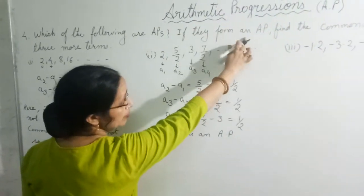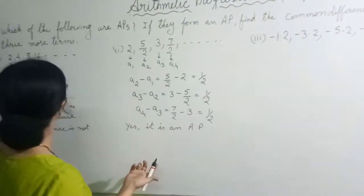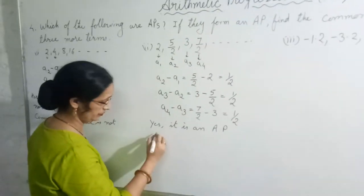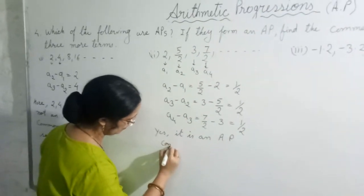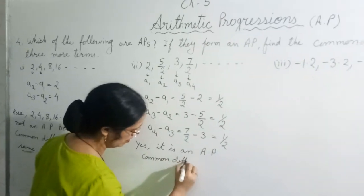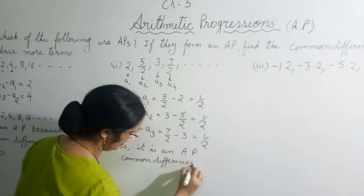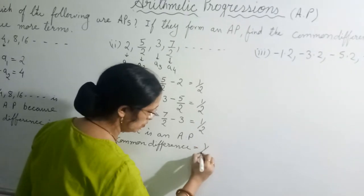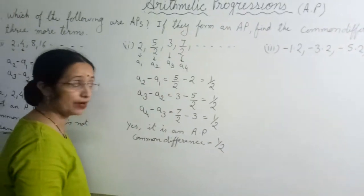Now if they form an AP, find common difference. So what is the common difference? Common difference is equal to half.